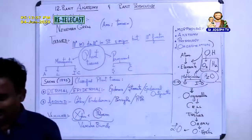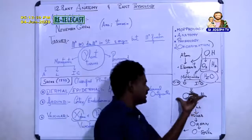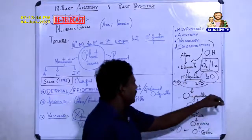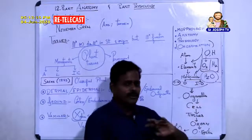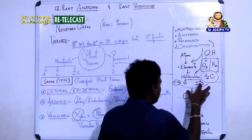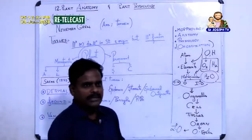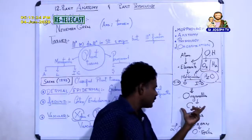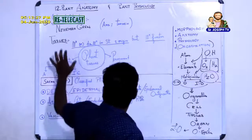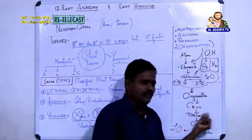This is what we call organization. Organelles form a cell — it may be prokaryotic or eukaryotic. Many cells group together to form tissues, which we will learn about later. I introduced organization because you are going to learn about tissues in this lesson.